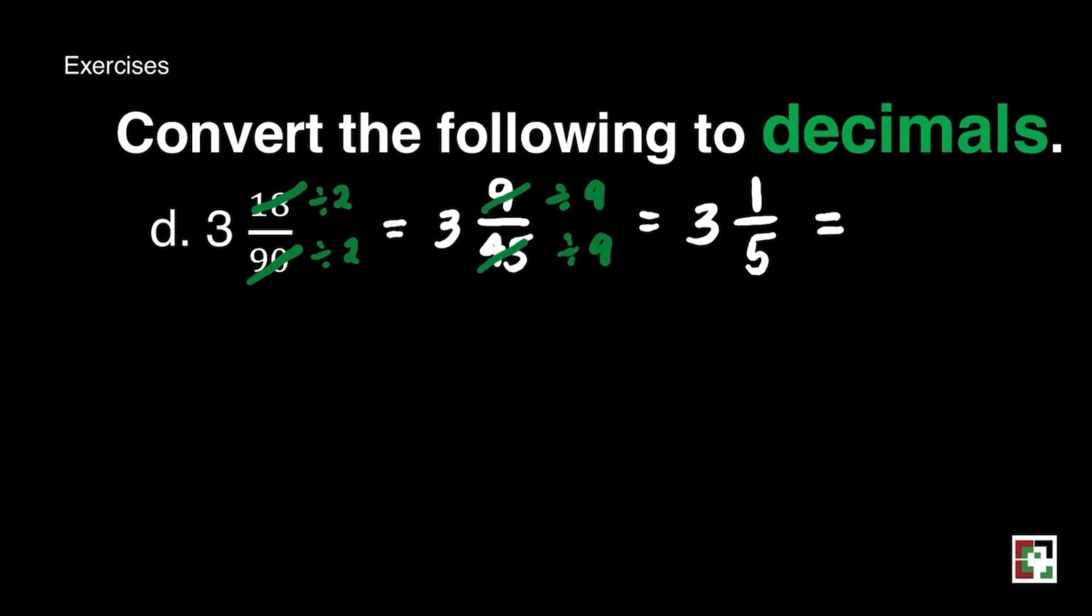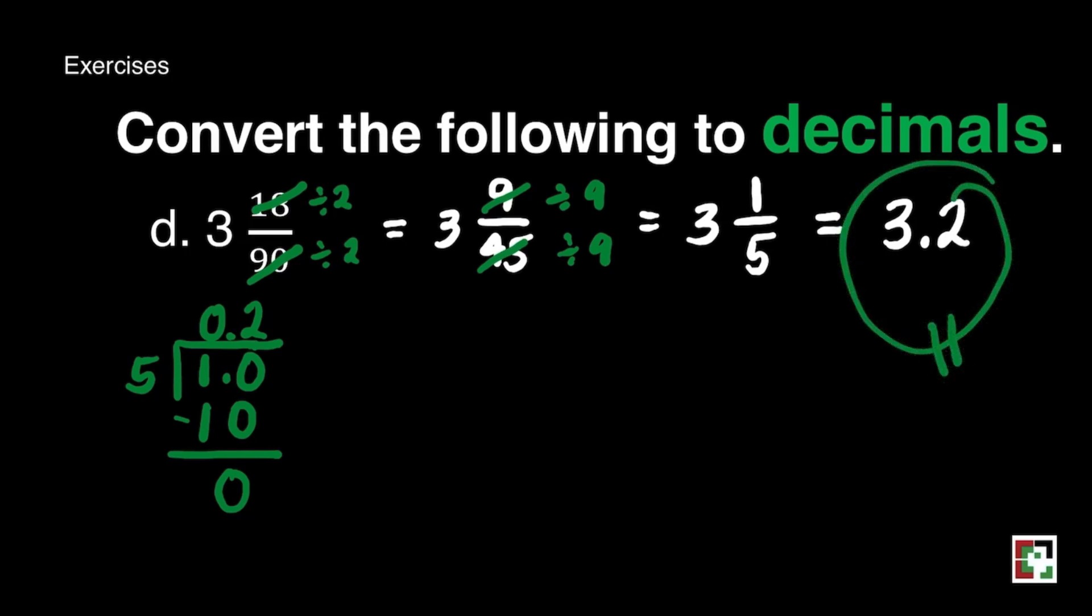We're ready to change 1 fifth to decimal. Just divide the numerator by its denominator and we will get 0.2. We can write this as 3.2 or 3 and 2 tenths. And it's easy.